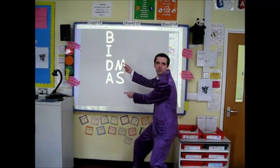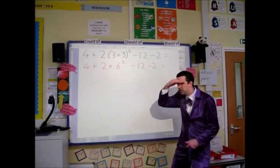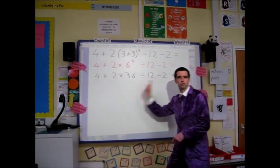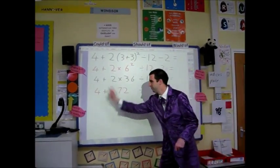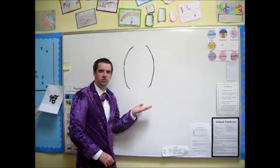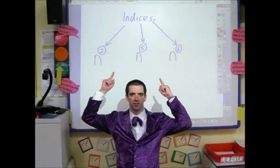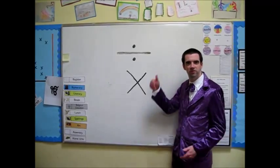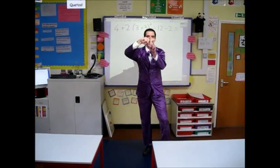You should use BIDMAS. First the brackets: 3 plus 3. Look for the indices next — 6 times 6 is 36. Now we work from left to right: multiply 2 by 36, then divide by 12. Working again from left to right: 6 plus 4, then take away 2. You should solve all the brackets first, next indices, then work left to right when it comes to divide and multiply, then the same for add and subtract.